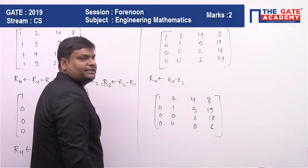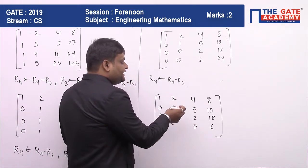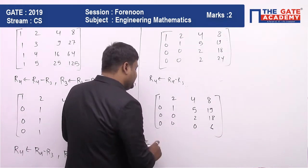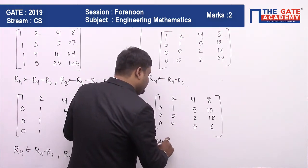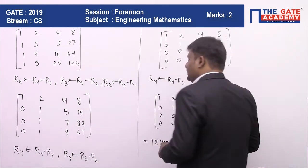Now take the determinant of this matrix. When you take the determinant, it will be 1 times 1 times 2 times 6, which equals 12. This 12 will be the answer.